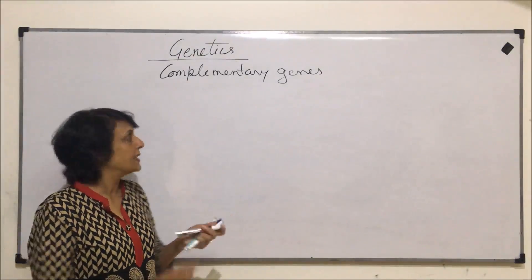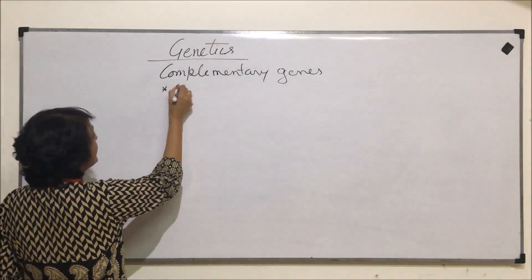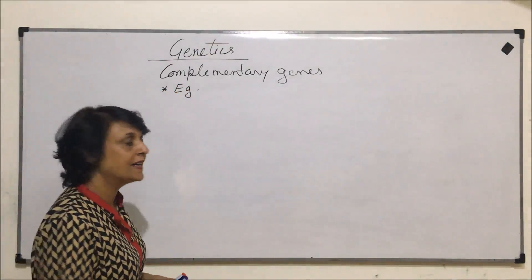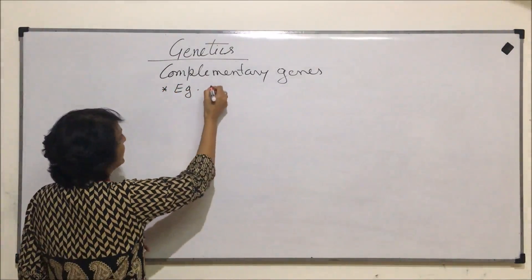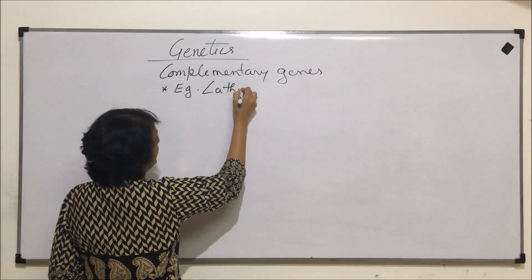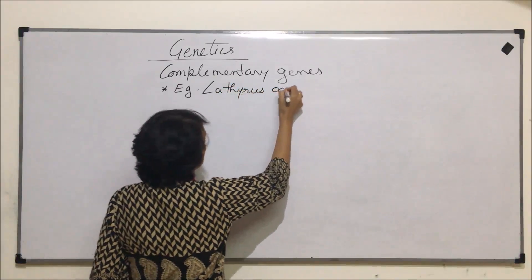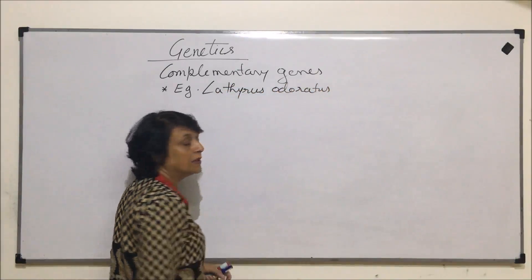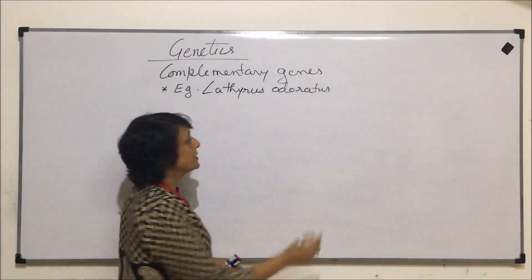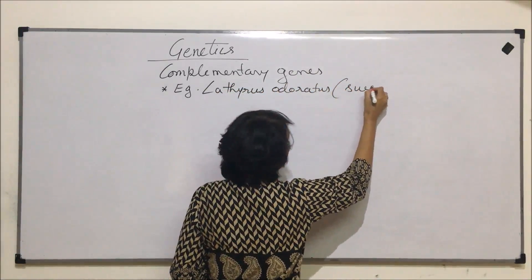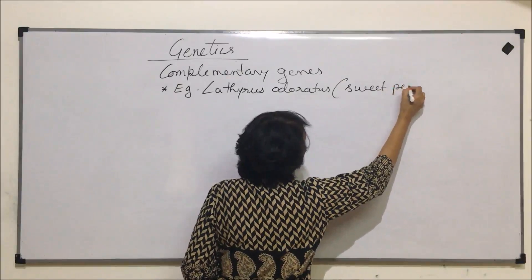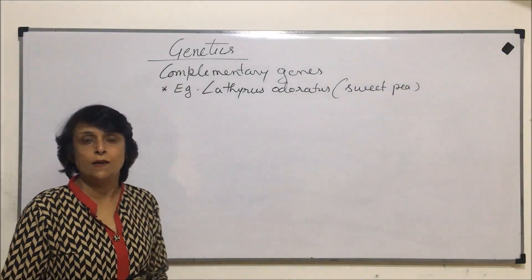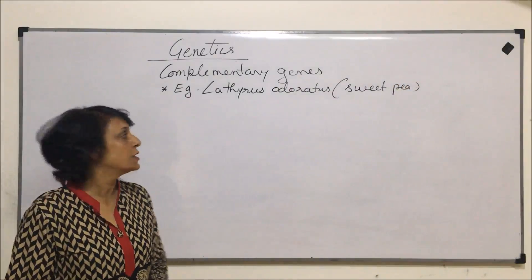Let us take an example to understand this. The example is of Lathyrus odoratus, commonly known as sweet pea. In sweet pea, the flower colors are of two types: one is purple.